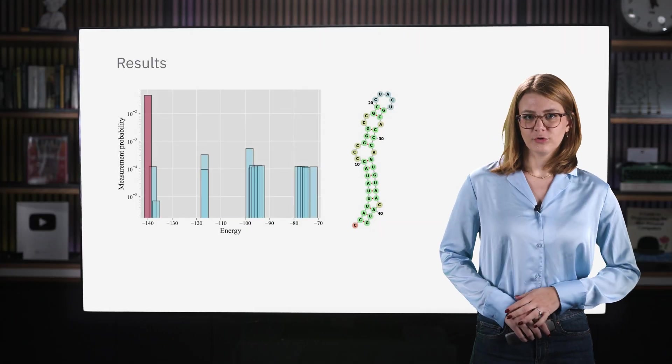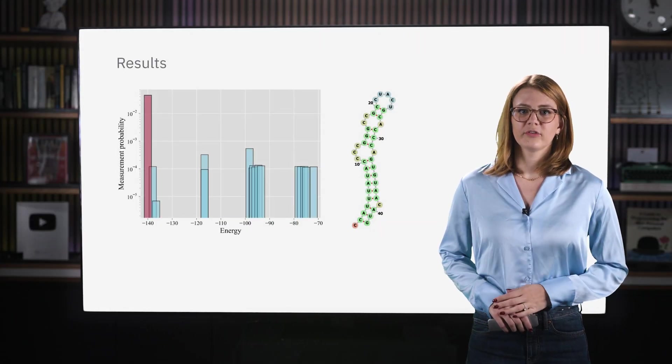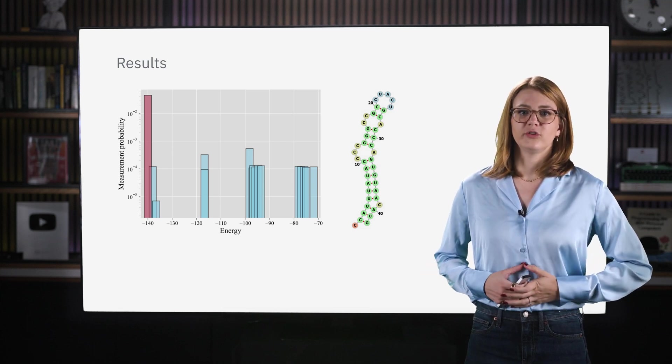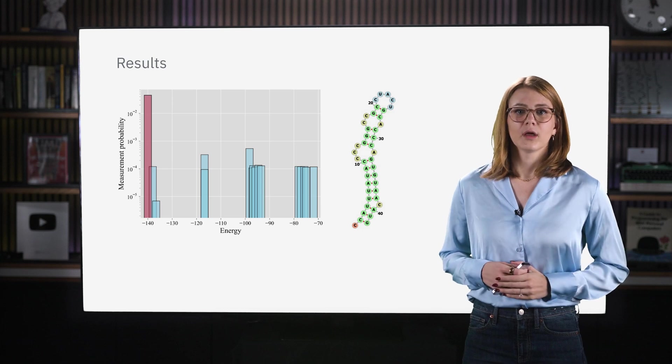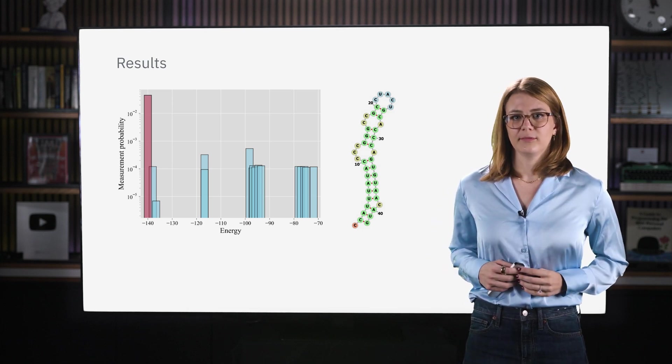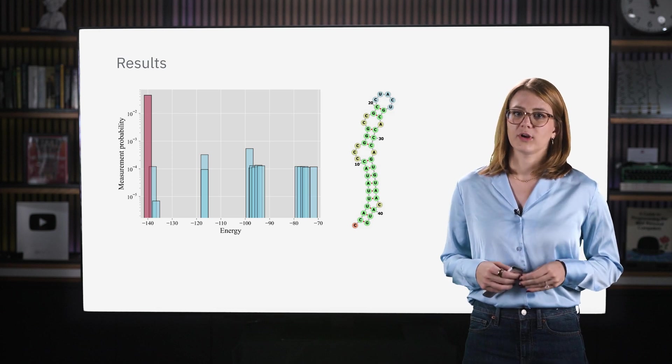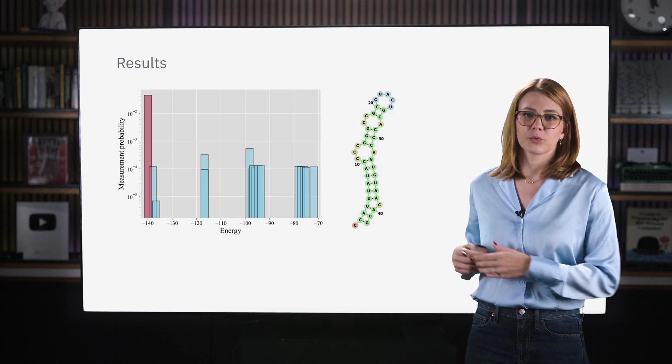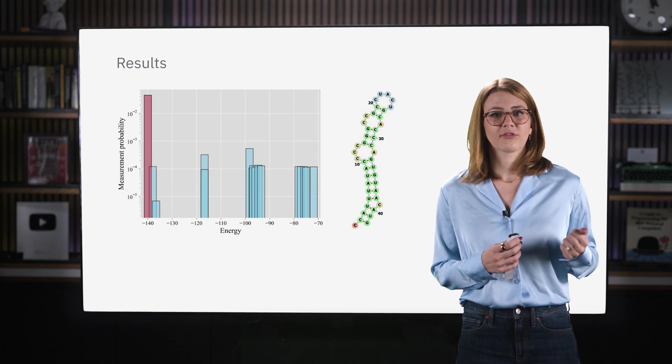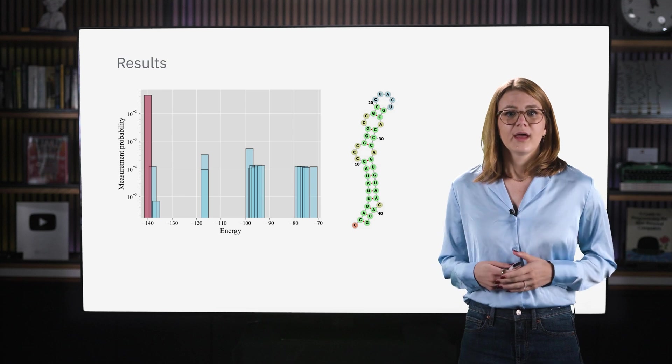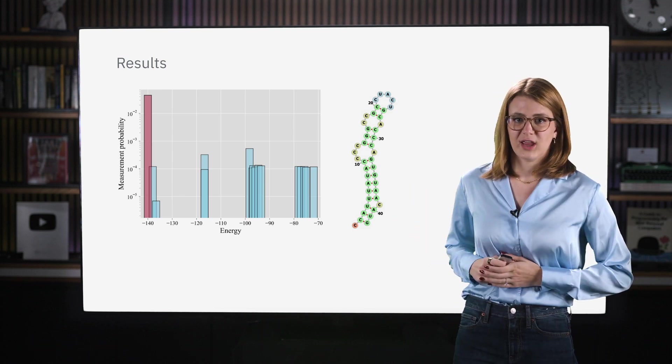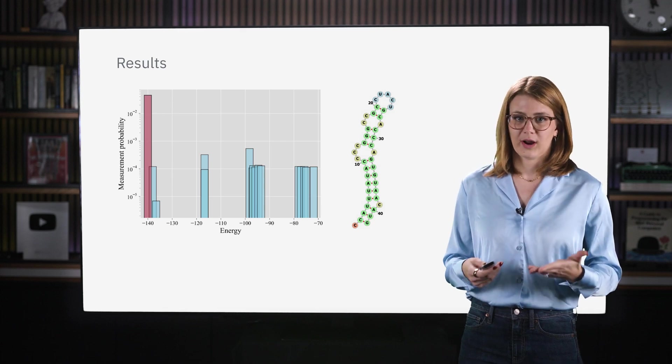This plot shows the distribution of measurement probabilities of the sample bit strings with the corresponding energies for a 42 nucleotide 80 qubit instance. Here, the bit strings symbolize pairings of the nucleotides. It illustrates that the lowest energy bit string has an energy value of minus 140, which matches the lowest energy bit string found by the comparative classical solver. So that's great. And this is the optimal folded structure of that nucleotide chain based on the lowest energy bit string the hardware has found.